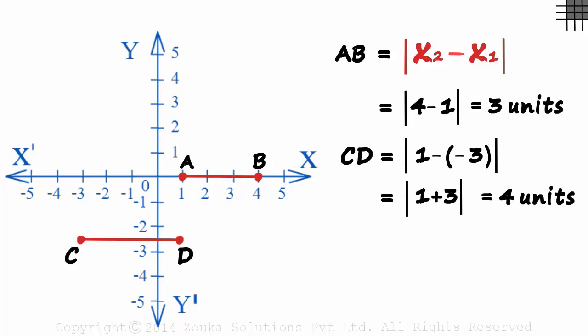Don't get confused seeing the absolute value sign. You would probably have guessed why we have it. In the case of AB, even if we subtract 4 from 1, we still get 3 units. The distance is always positive.